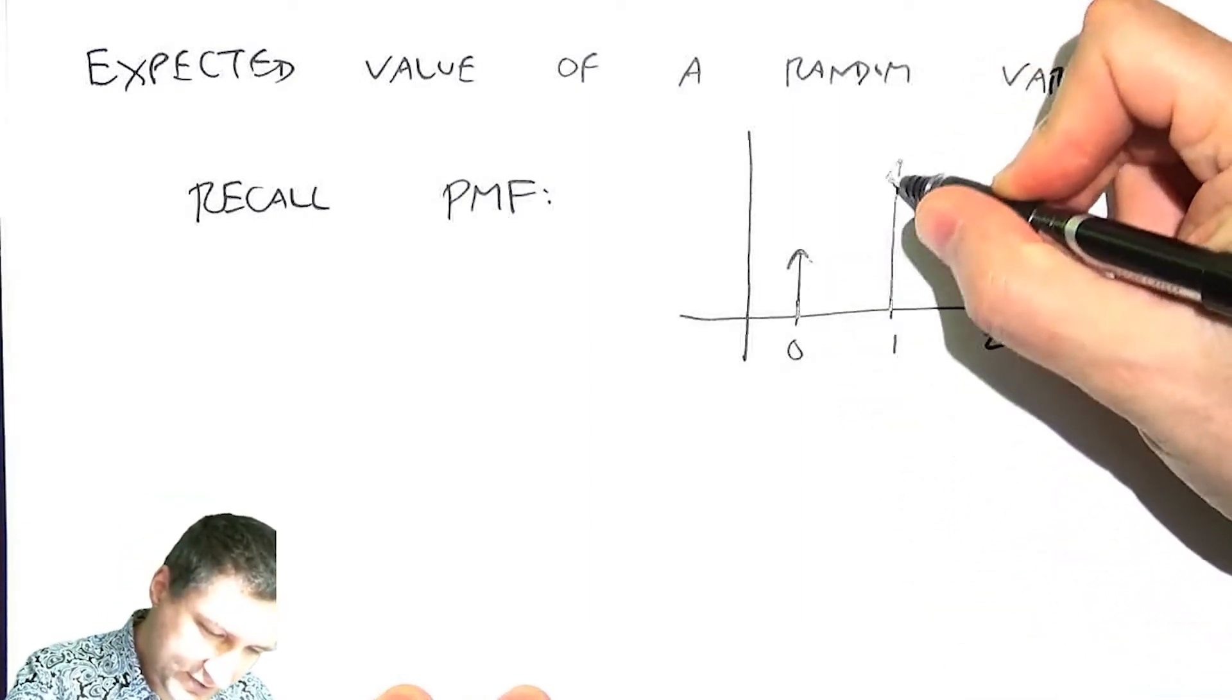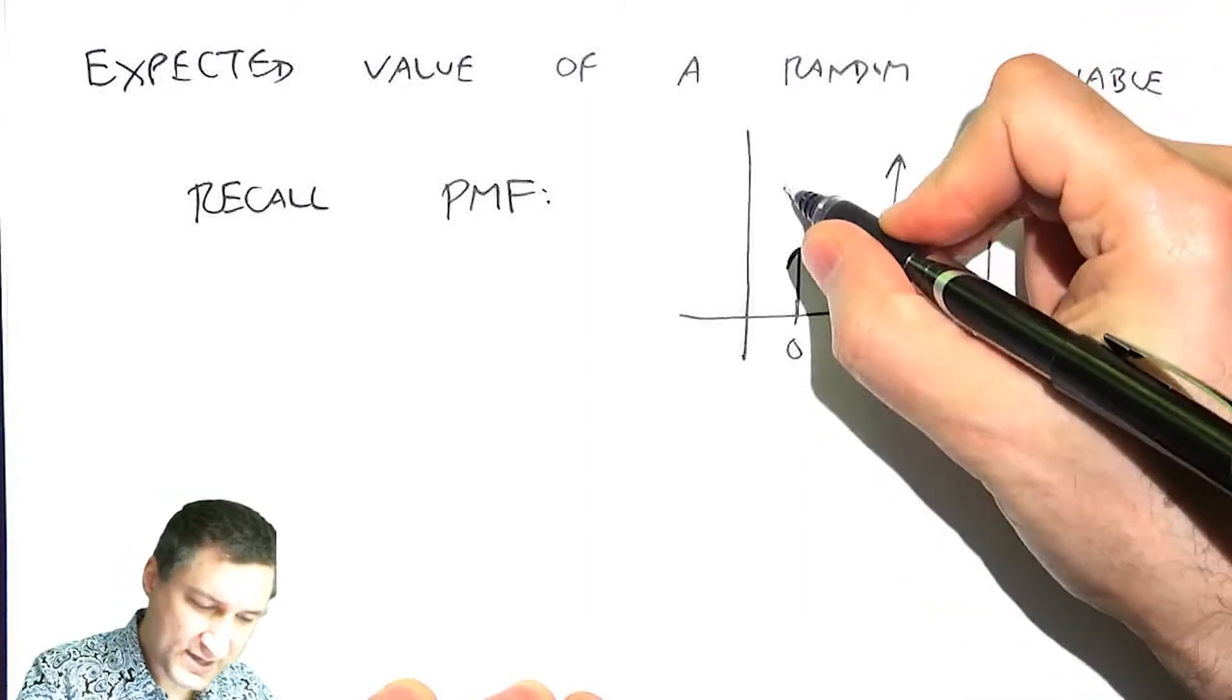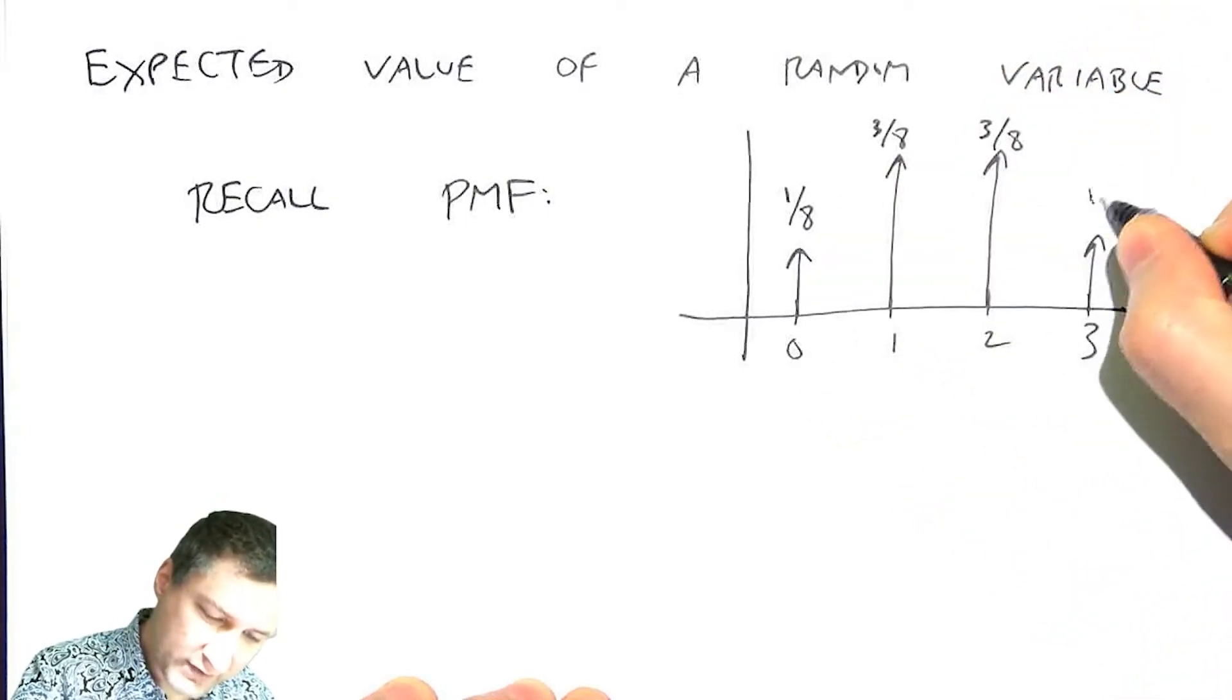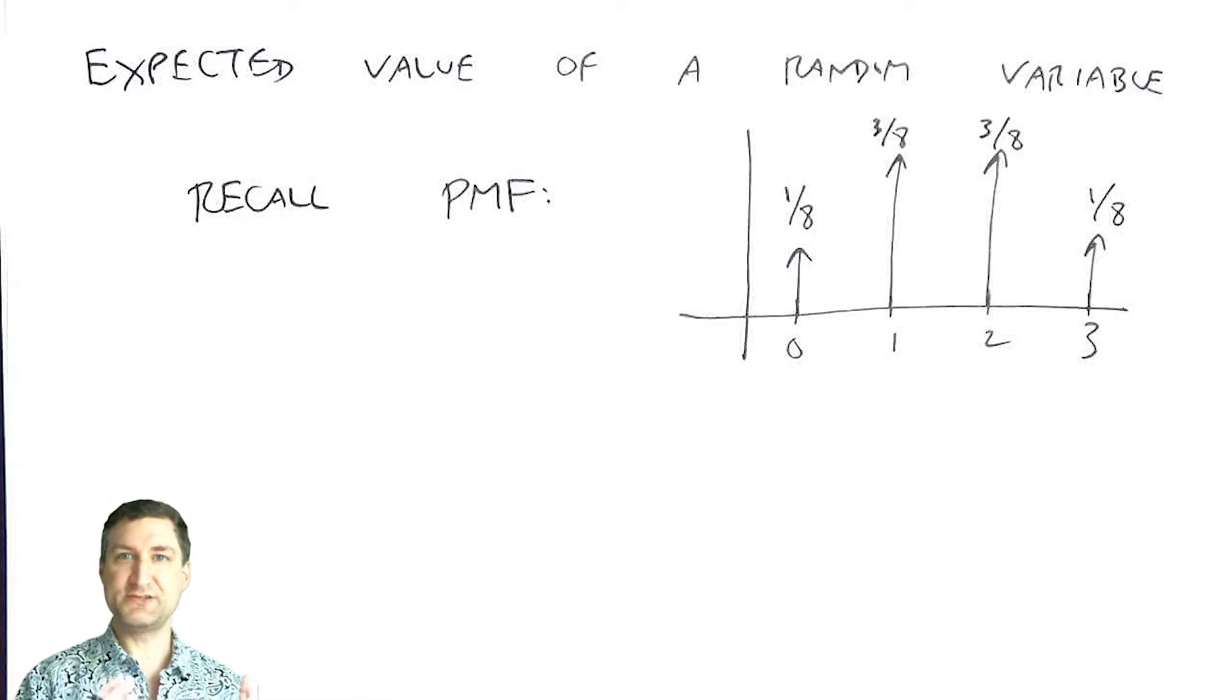And let's suppose, for example, we're flipping a coin three times and counting the number of heads. So this is a binomial random variable and has this PMF. And if I add up all the values, I get one because that's all the probability there is.